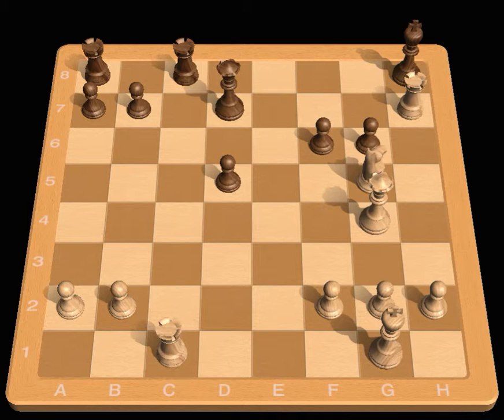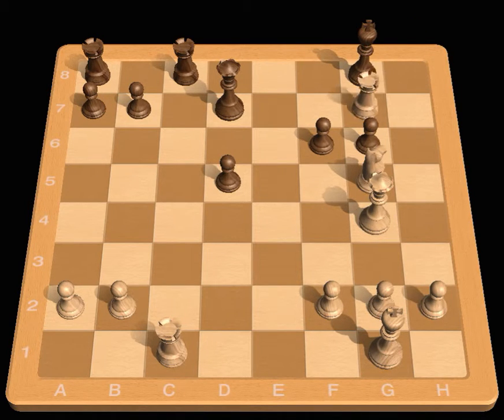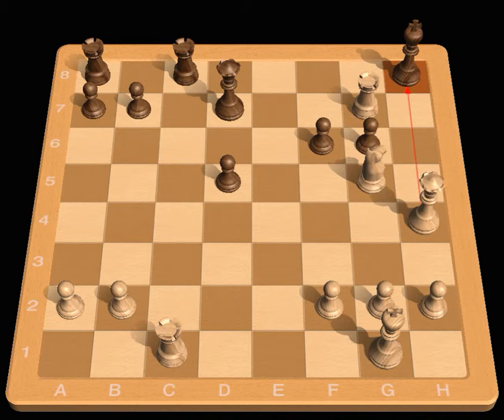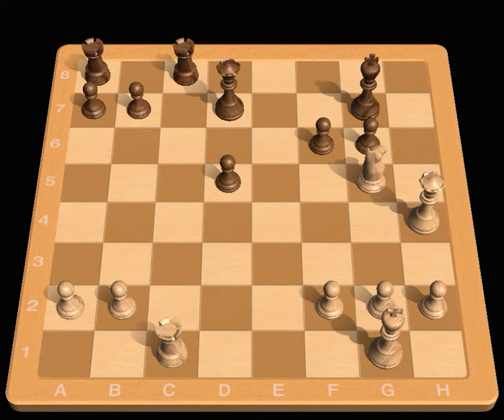King h8, Queen h8. The newly opened h file is the key to finally clinching the game. King g8, Rook g7 check, King h8, Queen h4 check. The star move. Black must finally take the intrepid Rook. King takes g7.